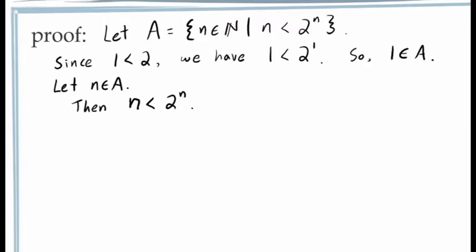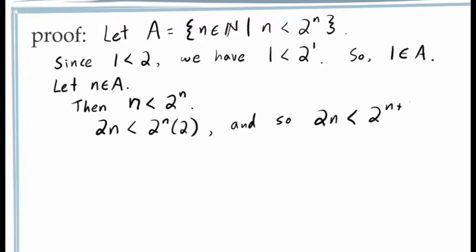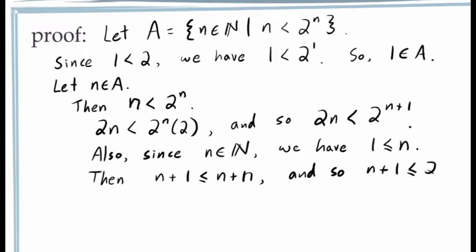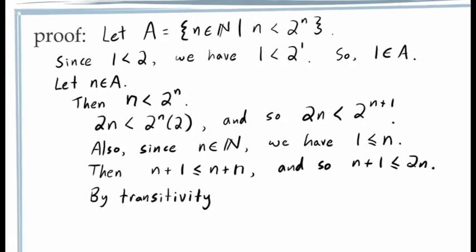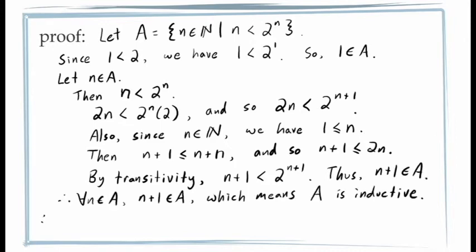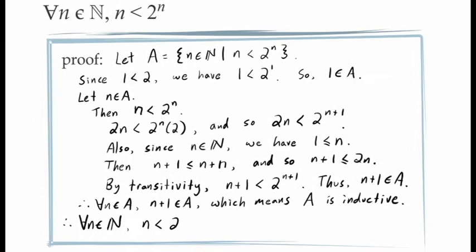We're trying to prove that n plus 1 is less than 2 to the exponent n plus 1. Beginning with our known inequality n is less than 2 to the exponent n, we can multiply both sides by 2 to give us 2n is less than 2 to the exponent n plus 1. Next, since n is a natural number, we know n is at least greater than or equal to 1. If we add n to both sides of this inequality, we get that n plus 1 is less than or equal to 2n. Using transitivity, we have that n plus 1 is less than 2 to the exponent n plus 1. This shows that n plus 1 is an element in the set A, which proves the set A is inductive. By the principle of mathematical induction, all natural numbers are in the set A, meaning the inequality holds for all values of n in the natural numbers.